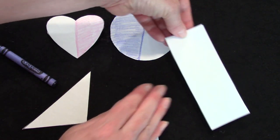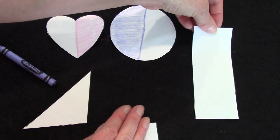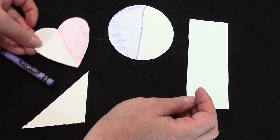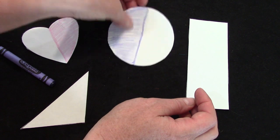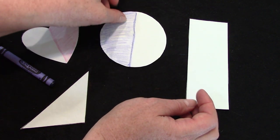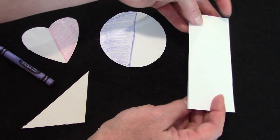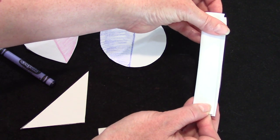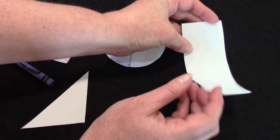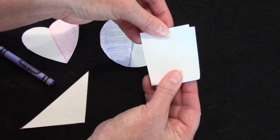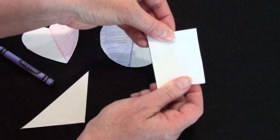Now I am going to fold my rectangle in half. When I folded my heart there was really only one way to fold it. When I folded my circle there was only one way to fold it. But if I were to fold this, I could either fold it this way or I could fold it that way. I'm going to do it this way, but you don't have to.